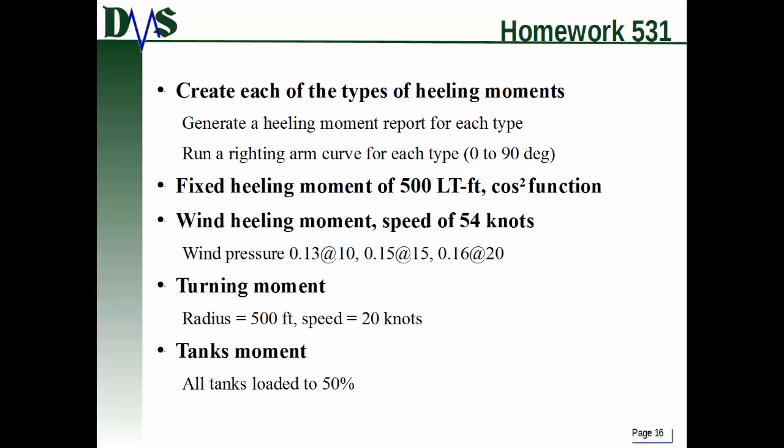Time for some application — homework number 531. Create each of the types of heeling moments that you saw in this tutorial and generate a heeling moment report for each type. Then run a righting arm curve for each type from 0 to 90 degrees. The moments I want you to define: a fixed heeling moment of 500 long ton feet with a cosine squared function, then a wind heeling moment where the wind has a speed of 54 knots.